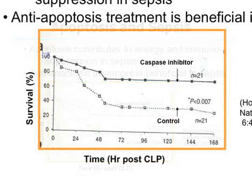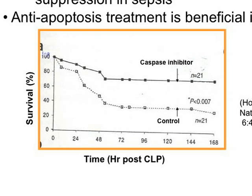For example, Hodgkins et al. from St. Louis showed that treatment with a caspase inhibitor can improve survival in a sepsis model induced by cecal ligation and puncture, or CLP.